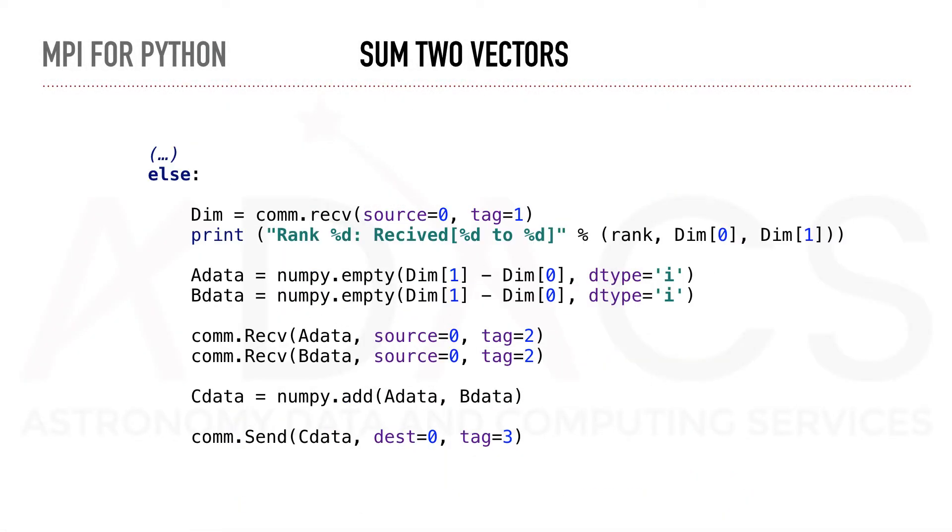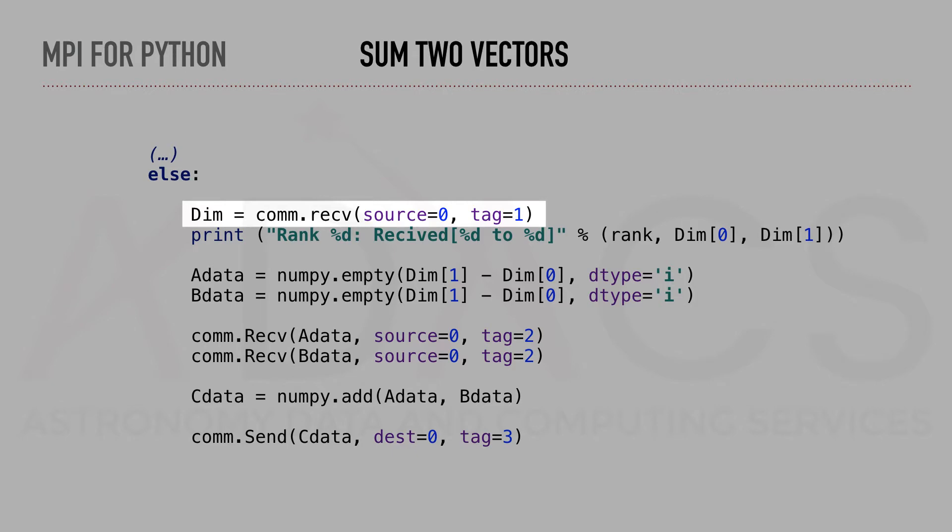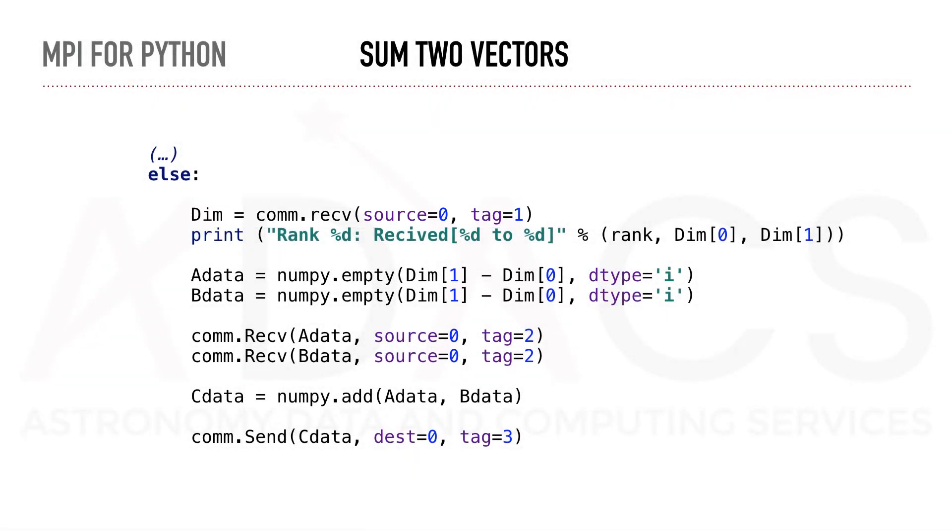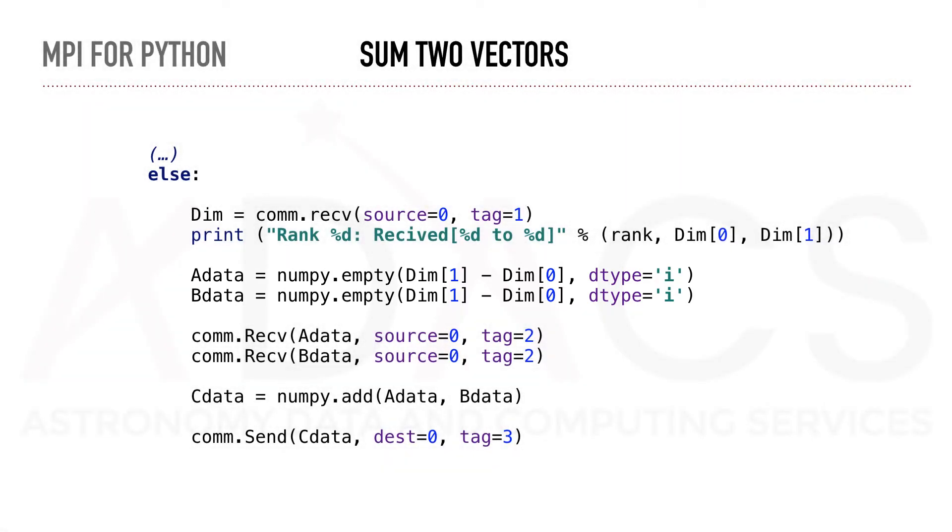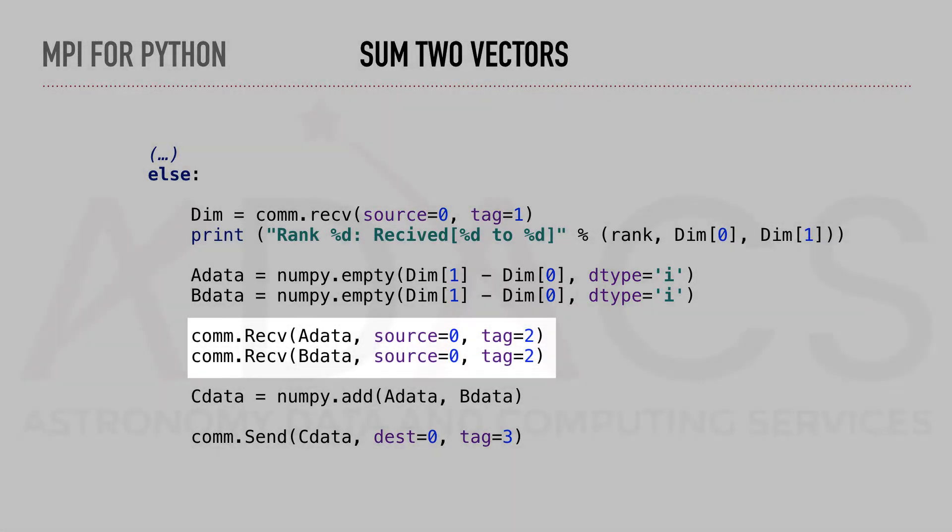Finally, for any other processes than 0, we proceed with the actual partial summations. First, we gather information about the buffer size. Using this information, we can create two empty NumPy arrays. Once created, we can receive the data for each array. Using NumPy, we sum both vectors and send back the result.